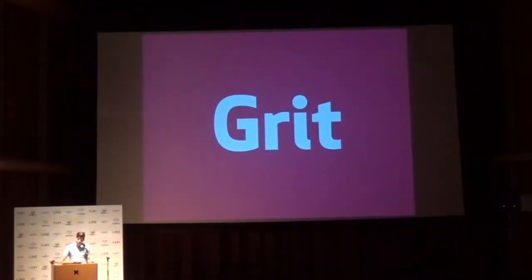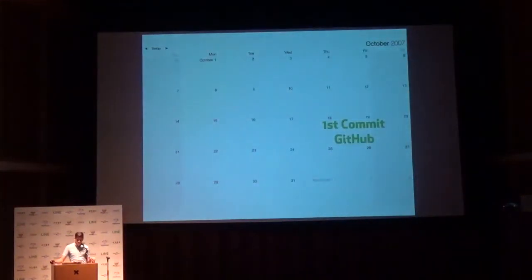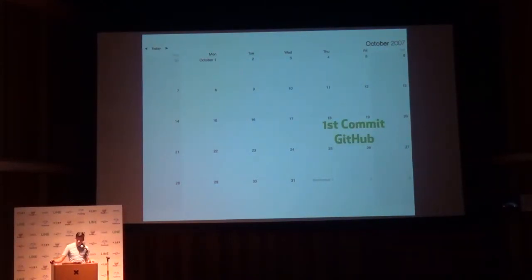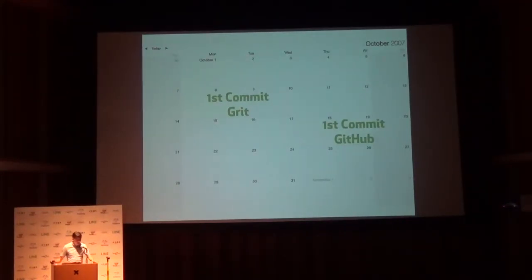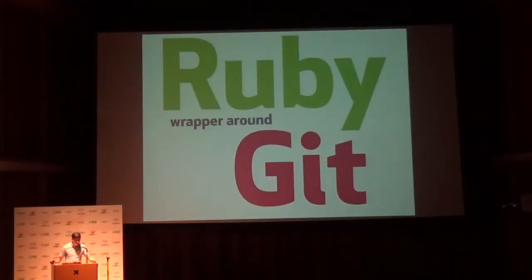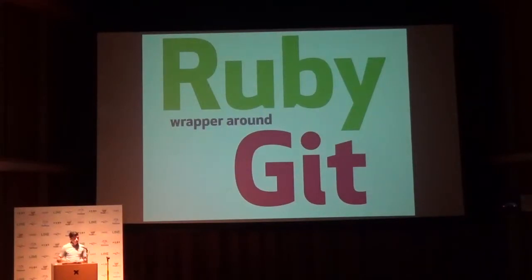The old system is fundamentally based on this library we have called Grit. It's an interesting fun fact — Grit actually predates GitHub. The first commit to GitHub was on October 19th, 2007, almost seven years old. The first commit to Grit was ten days earlier, October 9th. So we actually built this library to access Git data from Ruby before we started on the web app itself. Grit at its most fundamental level is a Ruby wrapper around Git — we shell out to Git, parse the results, and make them accessible in a programmatic way.